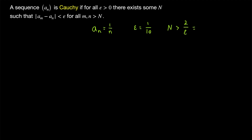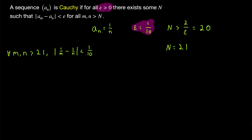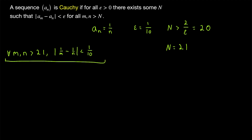So in this case, 2 over epsilon is 2 over 1/10, which is 20. So we want to take big N greater than 20. Then any two terms of the sequence after the 21st term will have a distance less than 1/10. Make sure you're seeing the connection between the definition and this example: we've taken an example of a positive epsilon value, and there is a big N — N greater than 20 — so that if we take any two terms of the sequence after that big N-th term, those terms will be within one-tenth of each other, within the given epsilon.